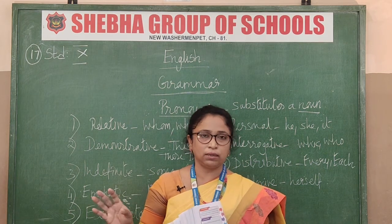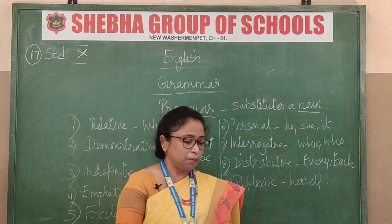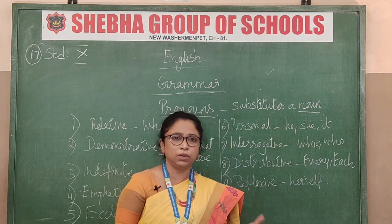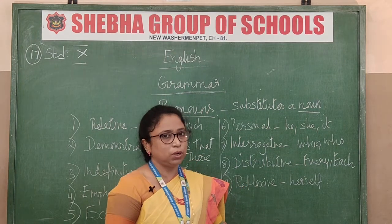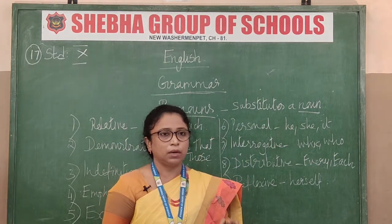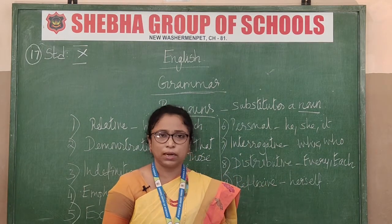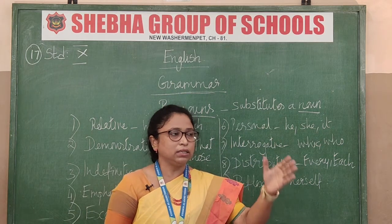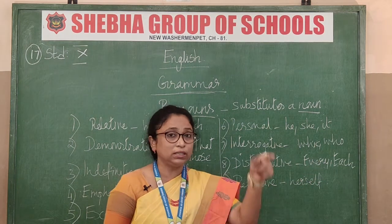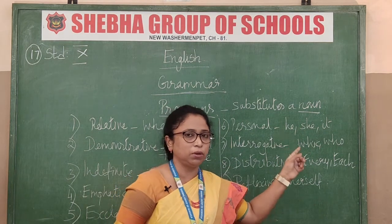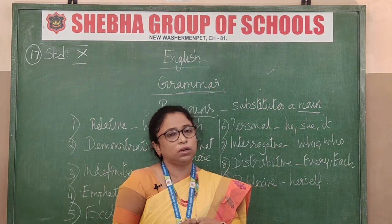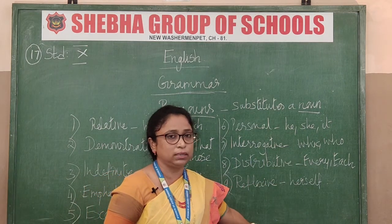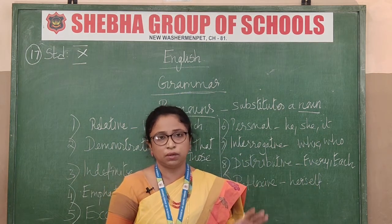Next chapter is pronouns. A pronoun is a word used instead of a noun. Nouns, verbs, adjectives, adverbs, and pronouns are all parts of speech. For example, instead of repeating 'Kasturi went to the market, Kasturi bought vegetables, Kasturi bought fruits,' we say 'she' — Kasturi went to the market, she bought fruits and vegetables. That 'she' substitutes the noun. There are nine varieties of pronouns.